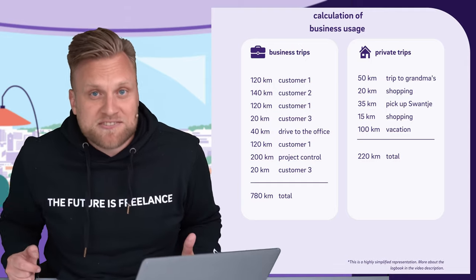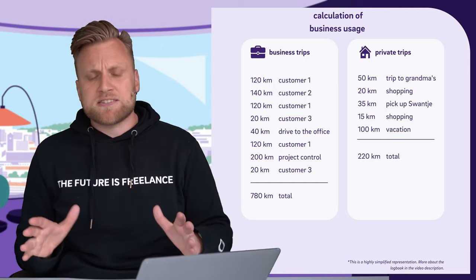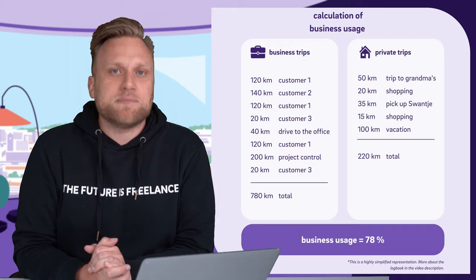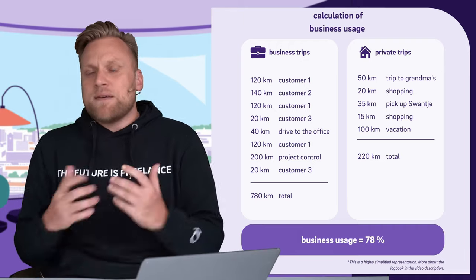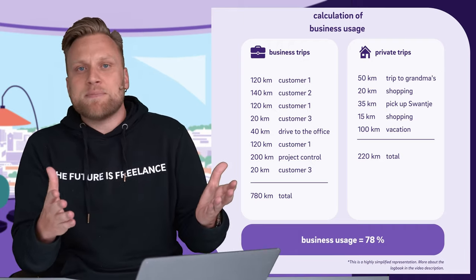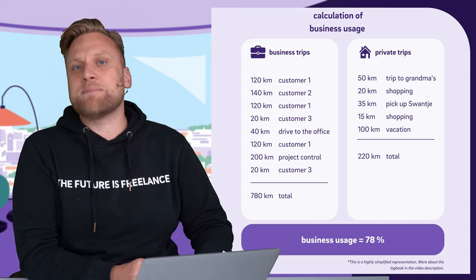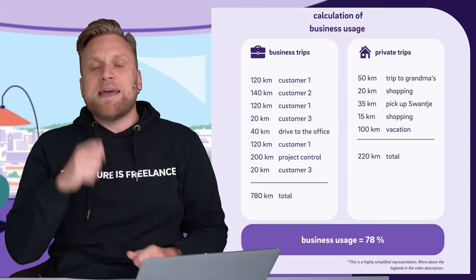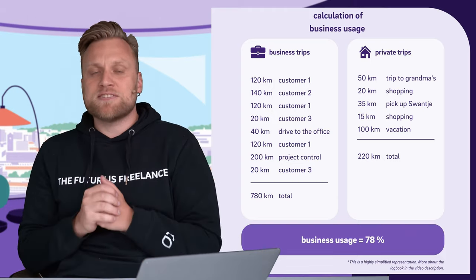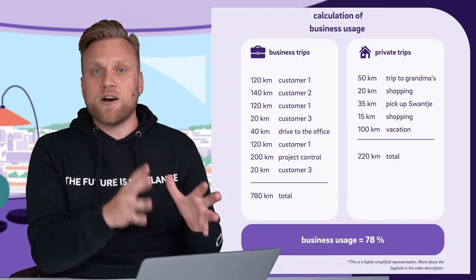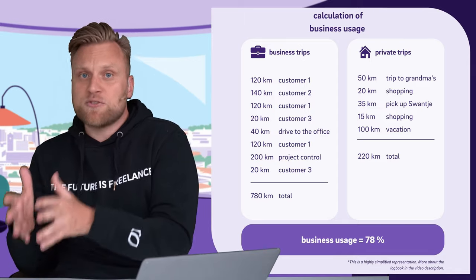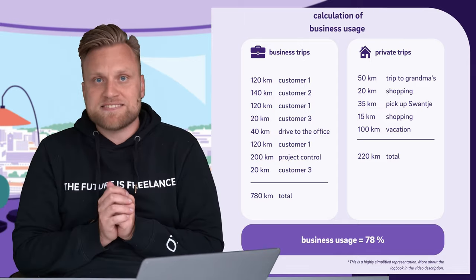Once you have done this for a representative period, for example three months, you can calculate a percentage. Then you will know that your business trips, for instance, make up 78%. And depending on the percentage of business use, you must assign the car either to business assets or private assets.